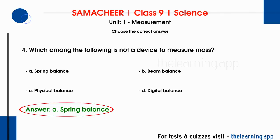Mass is the total amount of substance in an object. Weight is measured by spring balance, because weight involves gravitational force acting on the mass. When we add gravitational force to mass, the result is weight. So spring balance measures weight, not mass, making option A the correct answer.